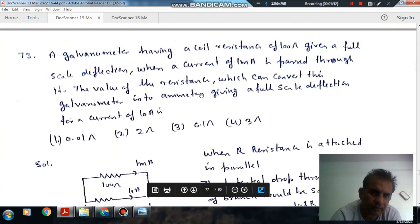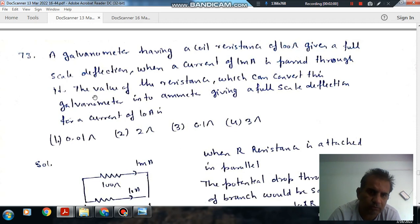Question 73: A galvanometer having a coil resistance of 100 ohm gives full scale deflection when a current of 1 milliampere is passed through it. The value of resistance which can convert this galvanometer into an ammeter giving full scale deflection for a current of 10 milliampere is: